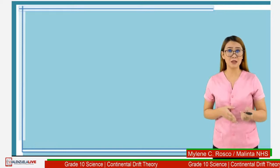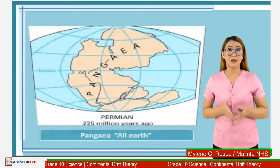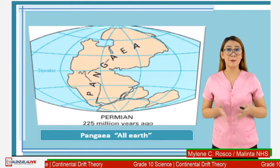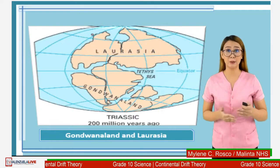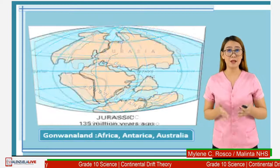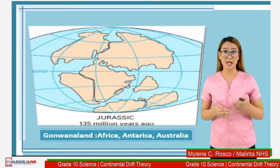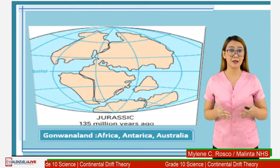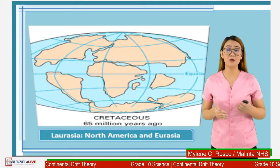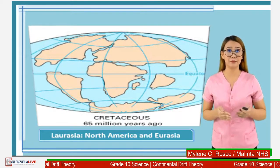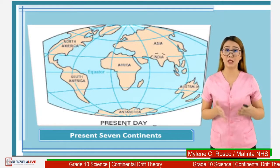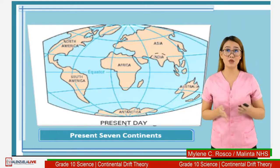This theory is called the continental drift theory. According to the continental drift theory of Alfred Wegener, there is a supercontinent named Pangea, which means all Earth. Pangea drifted into two smaller supercontinents, namely Gondwanaland and Laurasia. Gondwanaland broke apart forming South America, Africa, and Antarctica. Laurasia drifted and broke apart forming North America and Eurasia. The drifting and breaking up of the continents continued up to the present, giving us the seven major continents of the world.